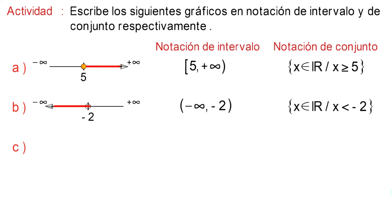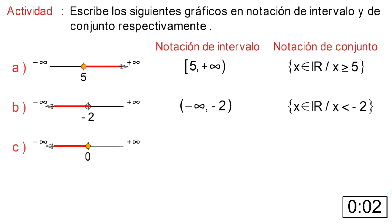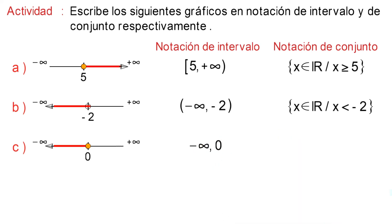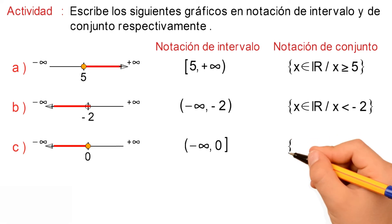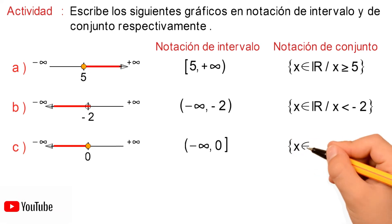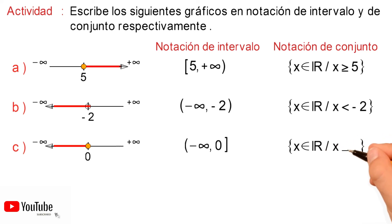Literal C. Tenemos el gráfico, donde su notación de intervalo es desde menos infinito hasta 0, con paréntesis a la izquierda y corchete cerrado a la derecha. Y su notación de conjunto es, entre llaves, donde todos los valores de X pertenecen al conjunto de los números reales, tal que X es menor o igual que 0.